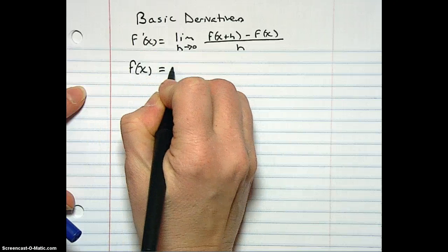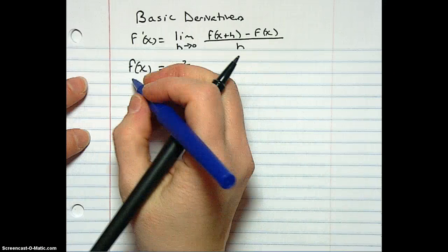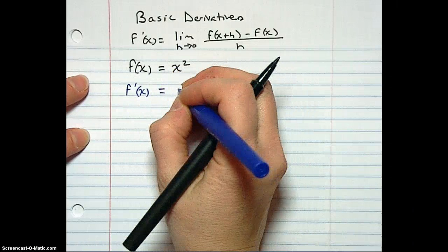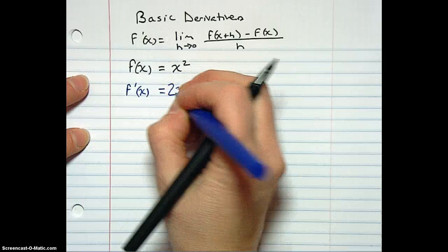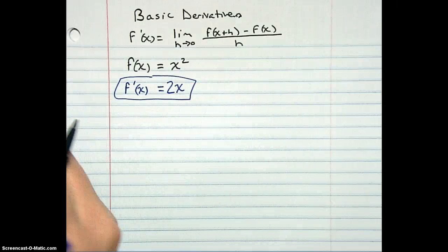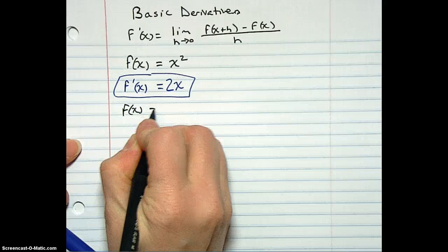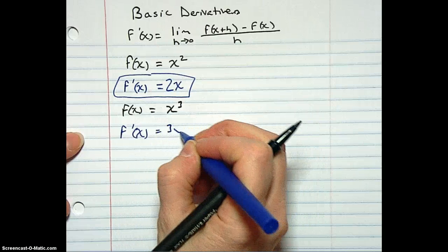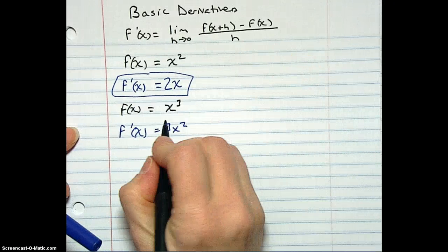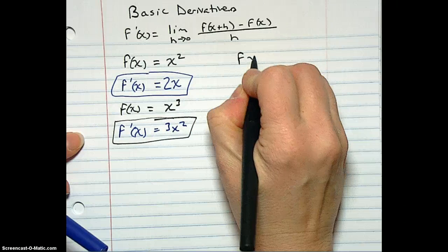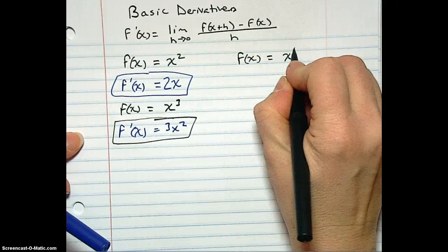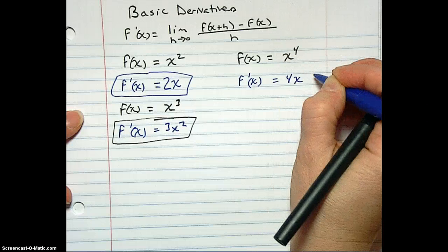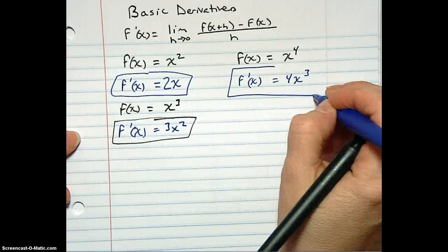So if f of x equals x squared, now you're just going to notice a pattern. I'm positive you'll get it pretty soon. And we did a bunch of x squared-ish equations. If f of x equals x squared, then the derivative of that is 2x. If f of x equals x cubed, f prime of x equals 3x squared. If f of x equals x to the 4th, f prime of x is going to equal 4x to the 3rd. Let me do one more.